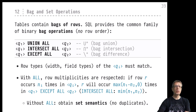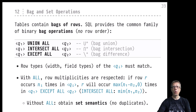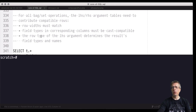If you remove the ALL modifier from these keywords and end up with just UNION, INTERSECT, or EXCEPT, you get the set versions of these operators. They will remove all duplicates after their operations have been performed, so there are no duplicates in any of the results of these operations when you use set semantics.